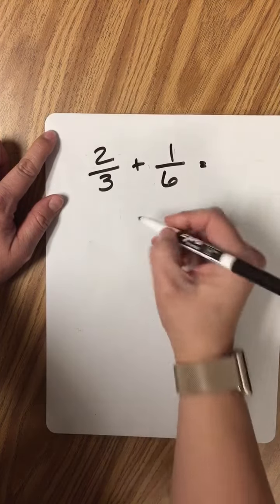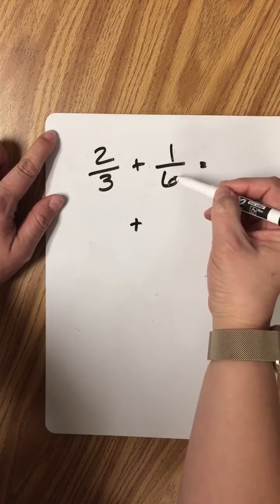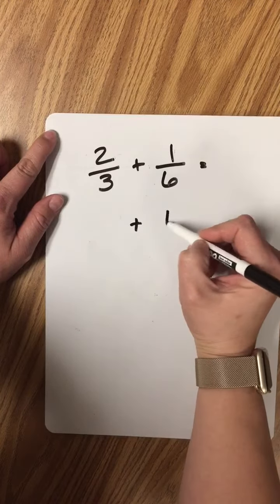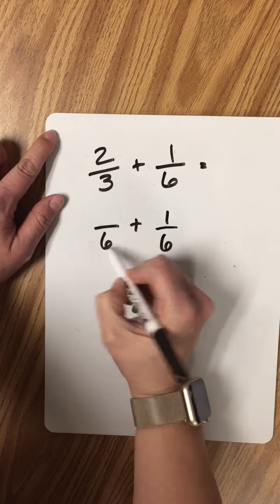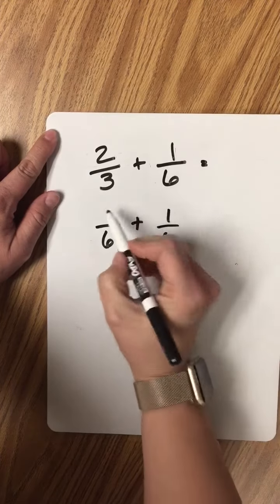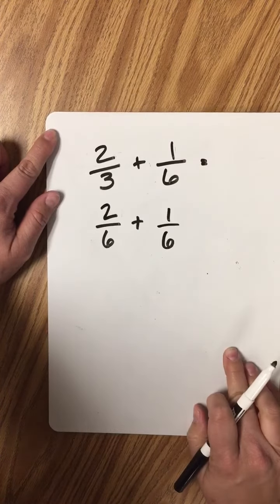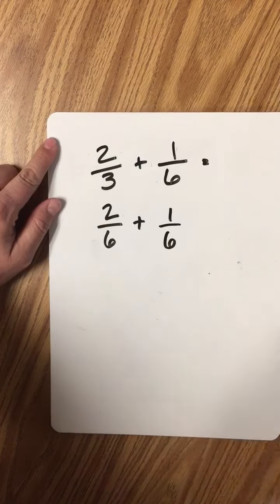So I'm going to use 6 as my denominator. Since 6 is already a denominator for this fraction, I am just going to rewrite it. Since I'm going to use 6 over here, I'm going to write the 6. Now, I cannot just write the 2 and call it a day.